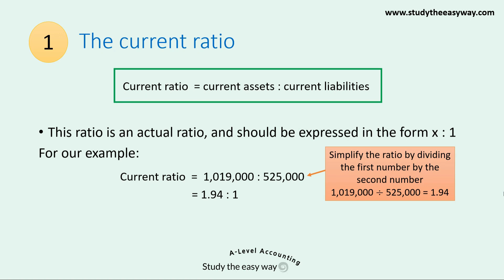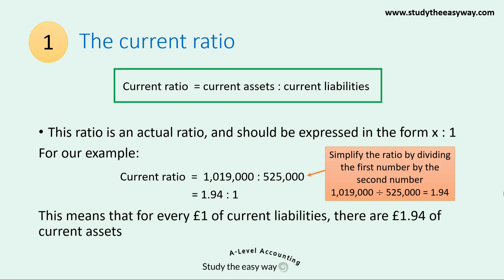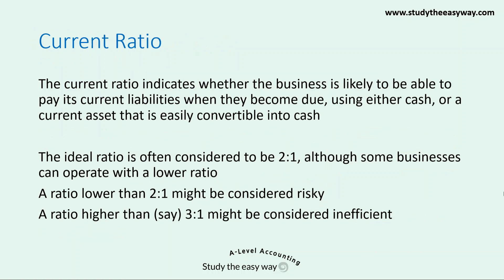The answer is shown to two decimal places, which is an appropriate level of accuracy. So what does this mean? You can interpret it as meaning that for every £1 of current liabilities, there is £1.94 of current assets. The current ratio indicates whether the business is likely to be able to pay its current liabilities when they become due, either using cash or a current asset that is easily convertible into cash.